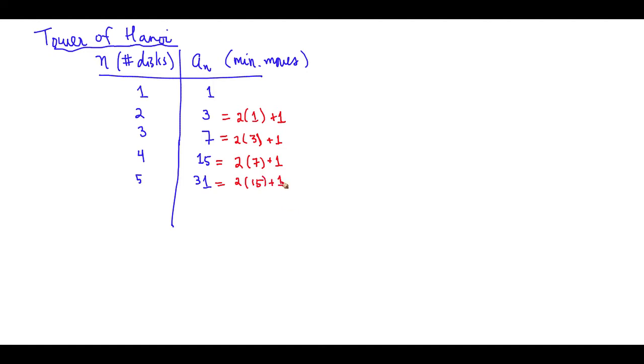So however many disks there are, if we want to figure out the minimum number of moves, we look at the previous minimum number of moves, multiply that by two and then add one to it. And we can trace this process back all the way back to one disk.